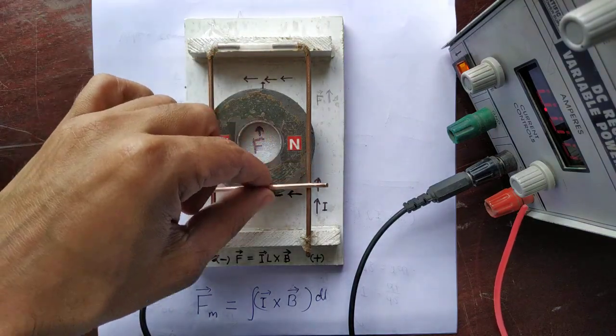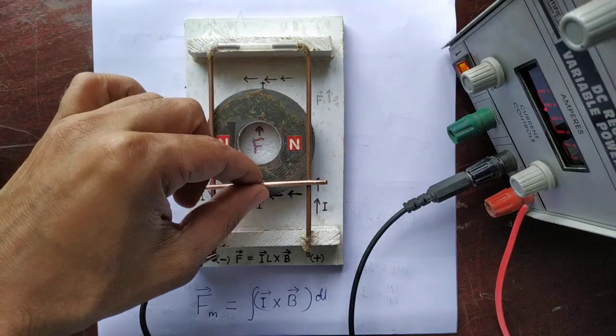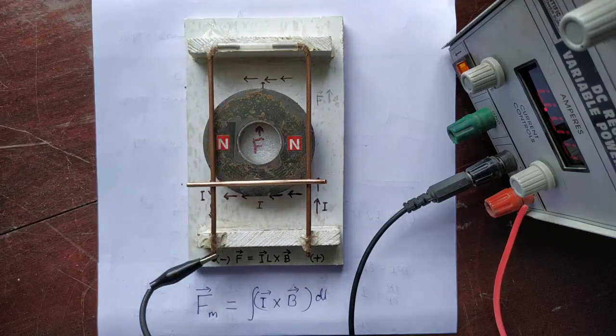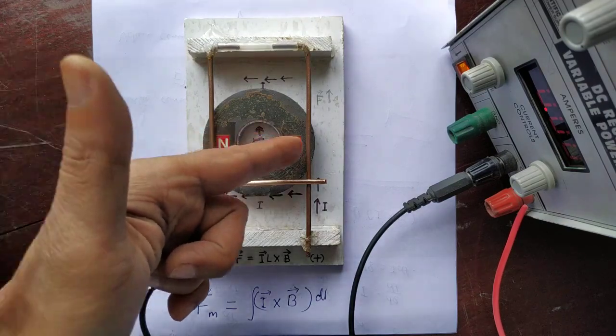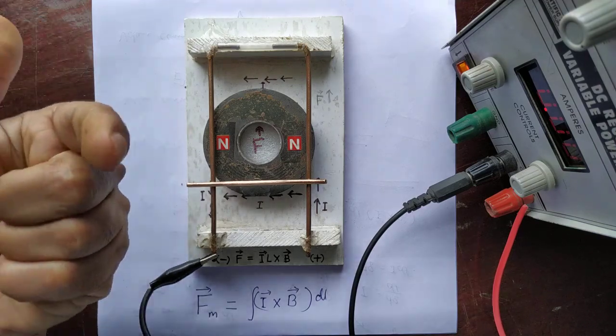But this conductor is free to move along this way. Now a speaker magnet is used to produce a nearly uniform magnetic field. You can see its north pole is marked, so the magnetic field is pointing towards you, out of the plane.